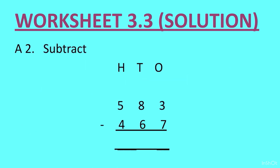Question 2 was 583 minus 467. Starting with the ones column: from 3 you cannot subtract 7, so go to the tens column, cut the 8, and write 7. The 1 ten goes to the ones column — 10 plus 3 is 13 ones, write 13 on top. 13 minus 7 gives us 6. Then tens: 7 minus 6 is 1. Hundreds: 5 minus 4 is 1. So the answer is 116.